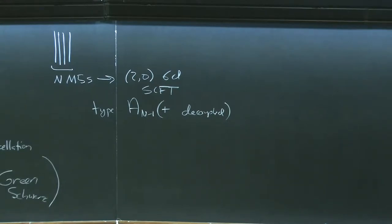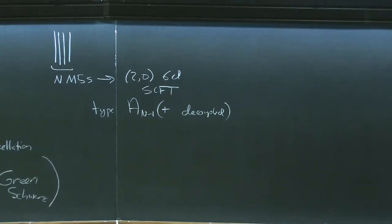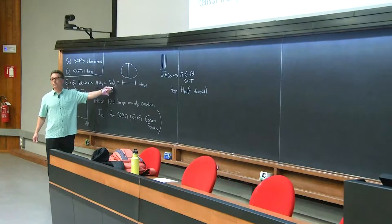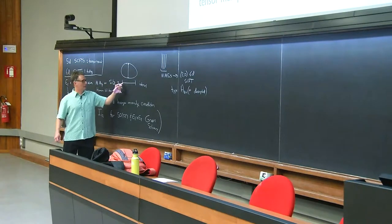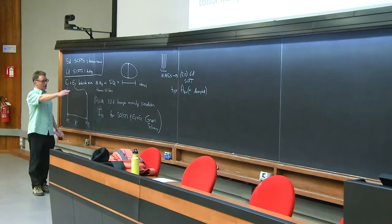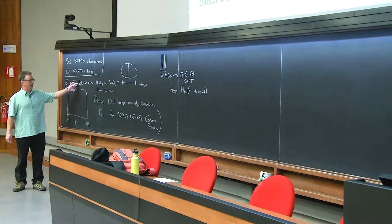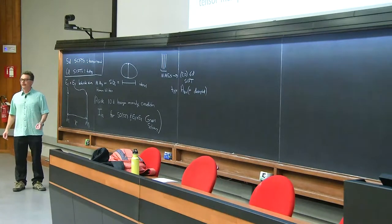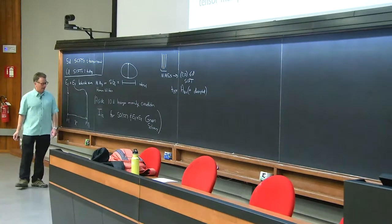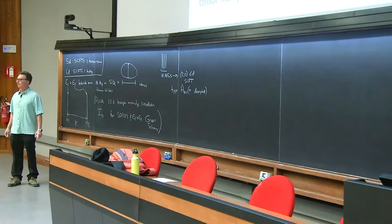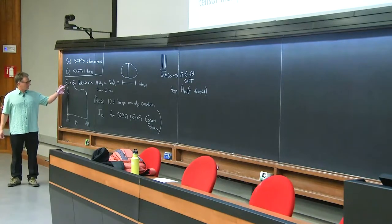Today I want to discuss (1,0) theories. One way to get (1,0) theories is to combine M5 branes with M9 branes. The E8×E8 heterotic string theory was shown in the 1990s by Horava and Witten to be dual to M-theory on an interval — sometimes written as S¹/Z₂ — which is a circle modded out by a reflection, giving an interval with two endpoints. This 11th dimension is related to the coupling constant of the string theory. Each of these M9 branes — sometimes called end-of-the-world branes — has an E8 gauge theory on it.